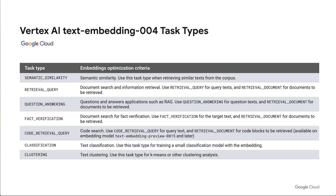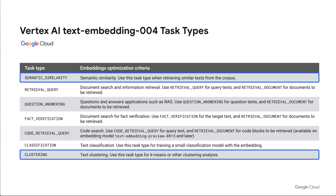Vertex AI's latest text embedding models now support multiple task types, enabling you to go beyond simple semantic search with embeddings optimized for various tasks — things like document retrieval, question answering, fact verification, and clustering. In our case, we'll use semantic search embeddings for our customer summaries, and clustered embeddings for the customer profiles, loyalty data, and segmentation data in BigQuery. BigQuery supports scalable vector search across our embeddings with built-in managed vector indexing, allowing for fast vector search across billions of vectors.